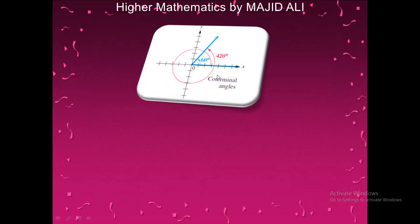For example, the angle of 60 degrees and the angle of 420 degrees are coterminal. After one complete rotation of 360 degrees, adding the original 60 degrees gives 360 + 60 = 420 degrees. Both 60 degrees and 420 degrees share the same terminal side, making them coterminal angles.